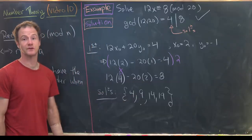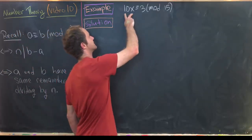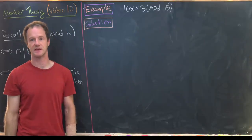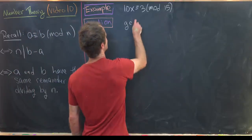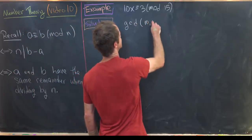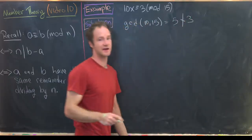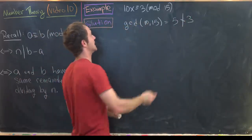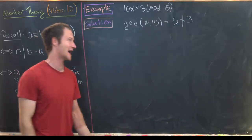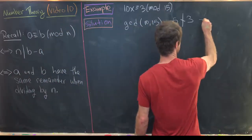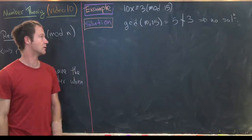For the next example, try to solve 10x ≡ 3 (mod 15). First check solvability: gcd(10, 15) = 5, but 5 does not divide 3. The gcd of the coefficient and modulus must divide the right-hand side — and that doesn't happen here. So there is no solution.